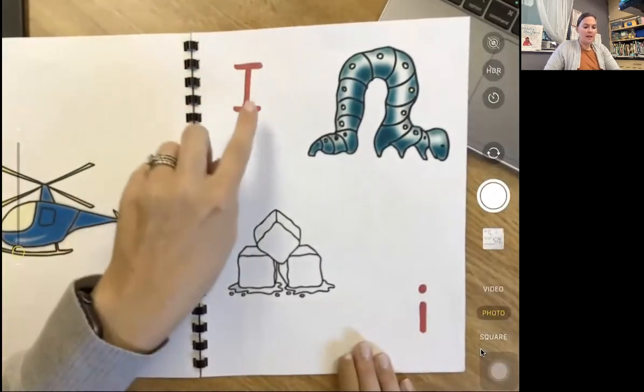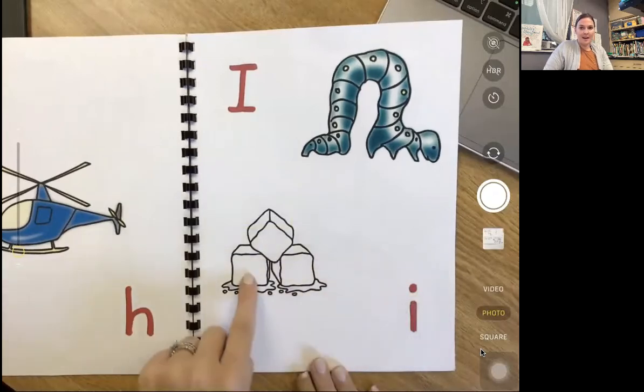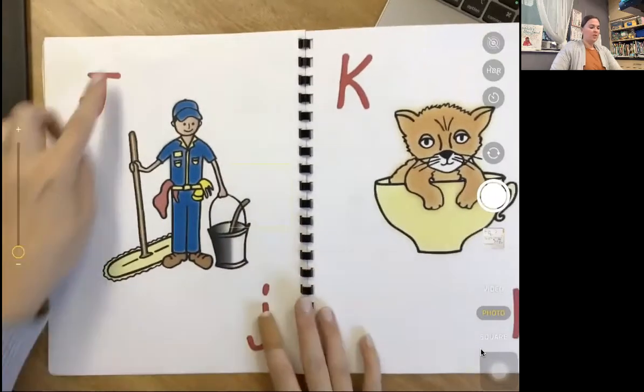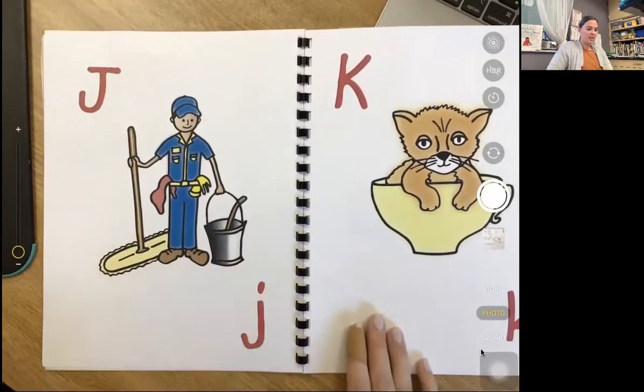I, eh, inchworm. I, I, ice. J, juh, janitor. J, juh, janitor.